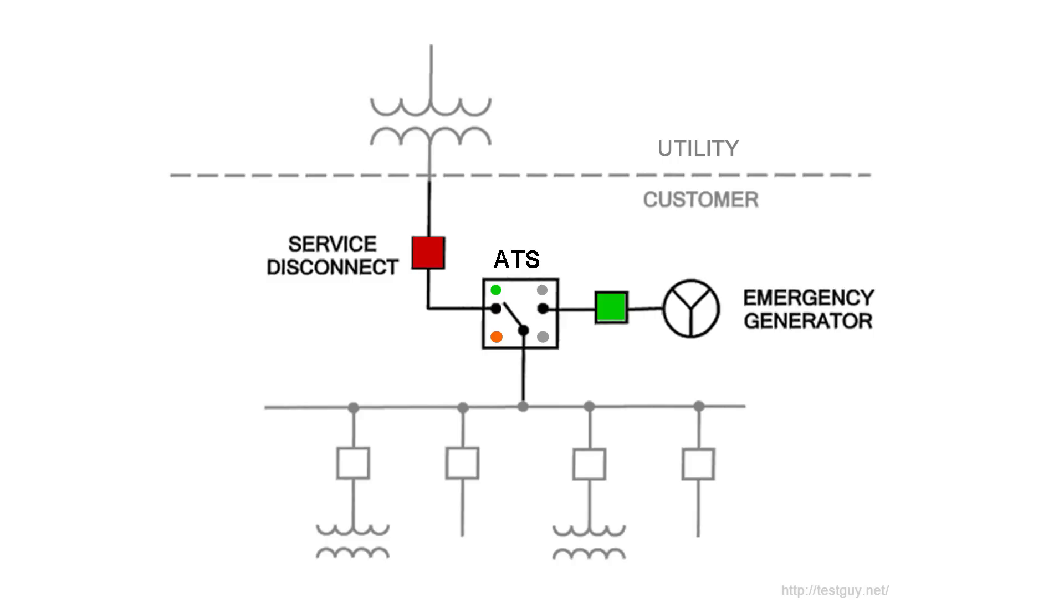Step 2. Close the alternate source breaker and start the engine generator. The alternate source available lamp will illuminate when correct voltage and frequency levels are sensed. After both sources have been verified, shut down the engine generator and put the generator's start control in the automatic position.